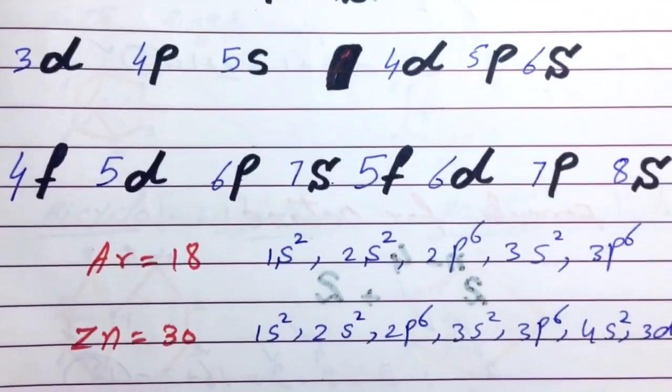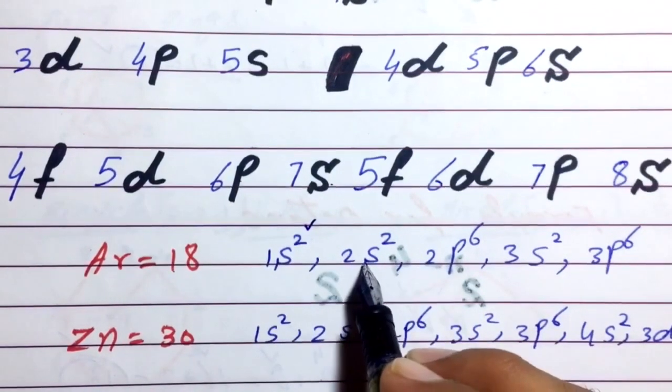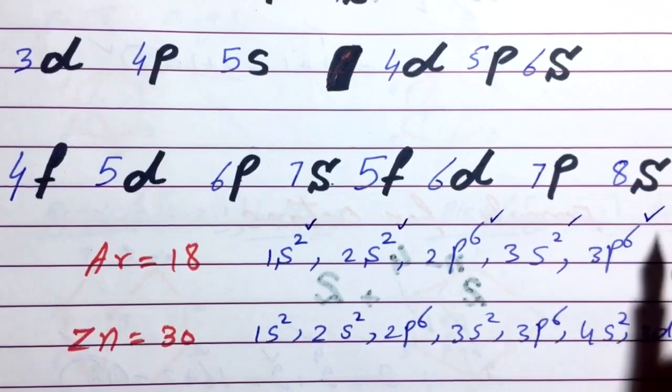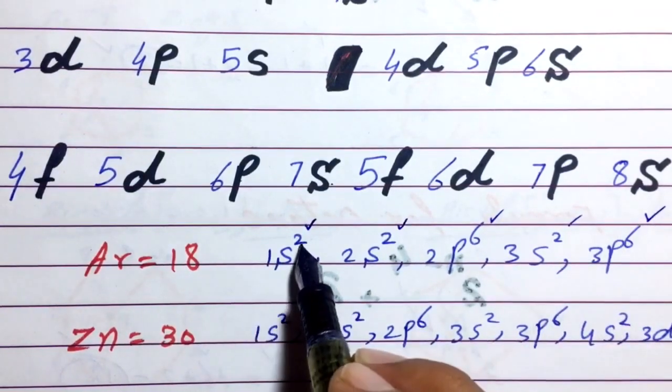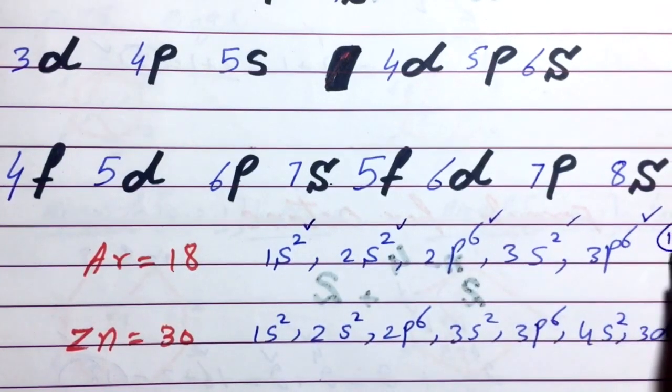In case of argon, we put 1S2, 2S2, 2P6, 3S2, 3P6. These are number of electrons 2, 2, 6, 2, 6 is equal to 18 electrons.